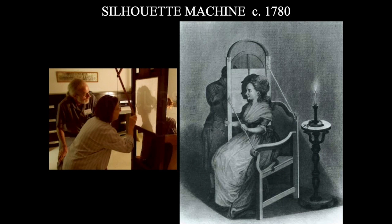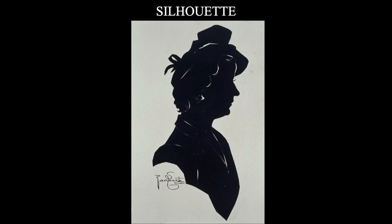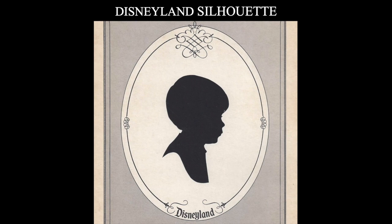Before we get to that, we need to take a look at the precursors to the camera. This would include the silhouette machine, which dates back to the 18th century, where you would have a model sitting in a chair, a light source on one side of them, and as the artist you would be behind tracing paper tracing their silhouette. Later it would be filled in with black ink or even black construction paper, and these silhouettes would hang in a house much like a portrait does today. Silhouettes were popular all the way through the Victorian age and even today you can get your silhouette taken at Disneyland.